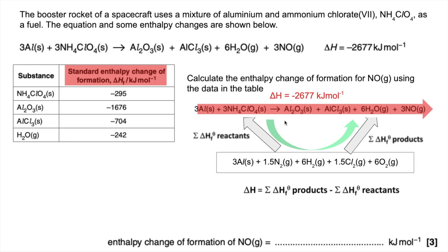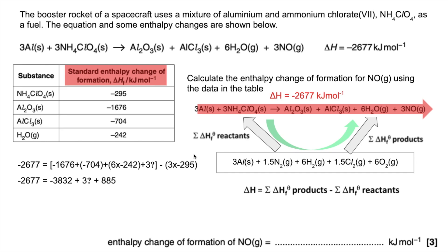Putting the numbers in: ΔH across the top minus 2677 equals the sum of the formation enthalpies of all products — there are three unknowns — minus the sum for the reactants, with three of those values from the table. Tidying up the numbers, the three unknowns sum to 270, so each unknown is 90. The answer is +90 kilojoules per mole. Don't forget the sign — if an enthalpy change comes out positive, you must write the positive sign.